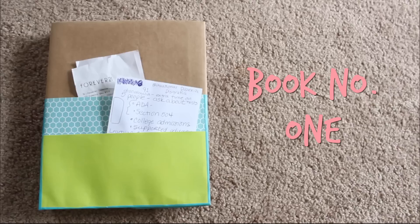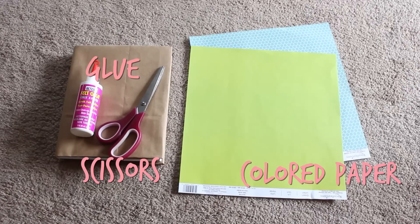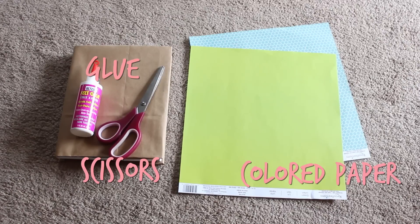So this first notebook is just a little bit complicated, but hang in there. I promise you can get it. So what you're going to need is glue, scissors, some colored paper, and then obviously your covered textbook.